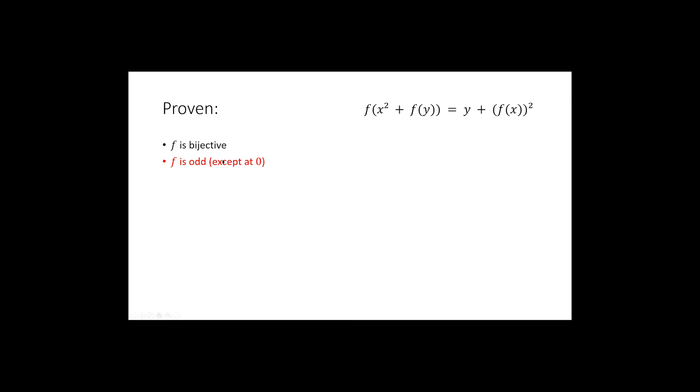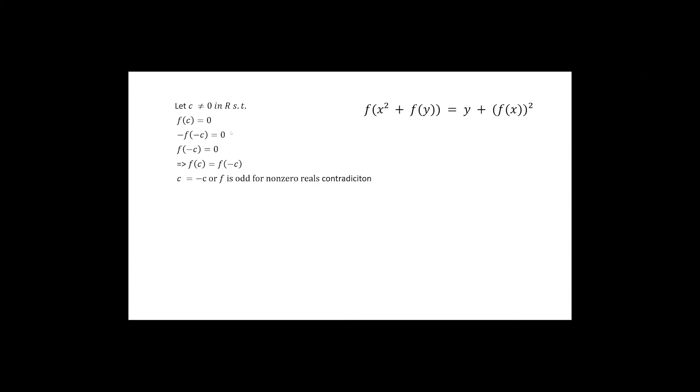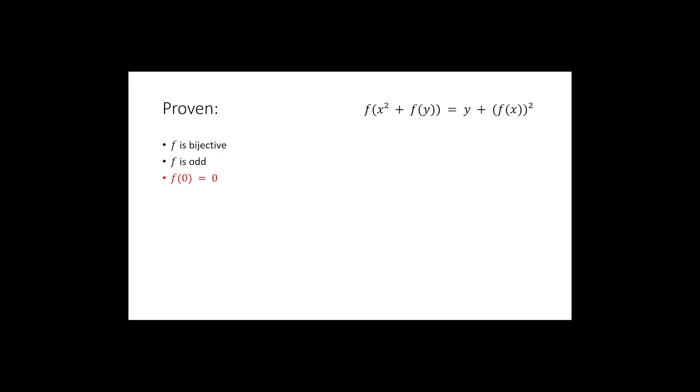Since f is surjective, it must have a root. Suppose c ≠ 0 is a root of f. Since f is odd and c is not zero, f(c) equals −f(−c). But since f(c) is 0, we get f(c) equals f(−c). By injectivity this means c equals −c, a contradiction since c ≠ 0. So no nonzero c can be a root of f, and therefore the only root is 0 — meaning f(0) equals 0.